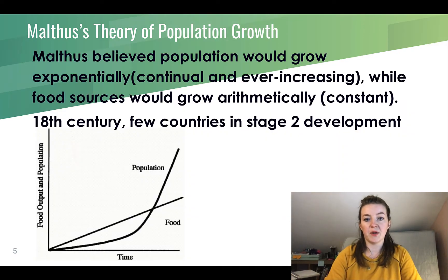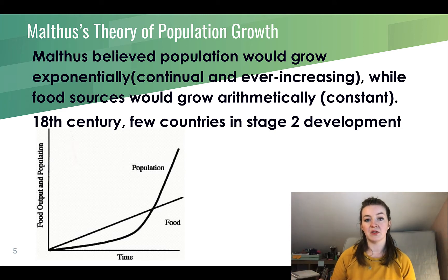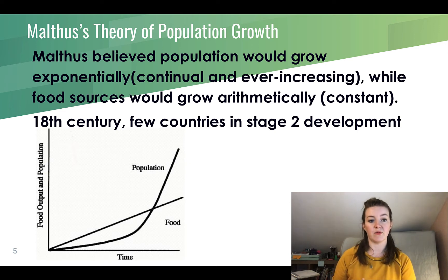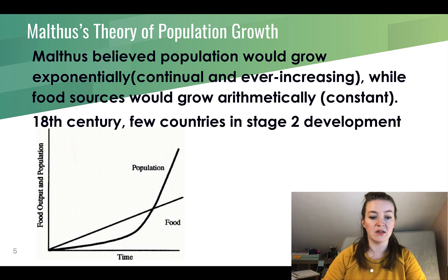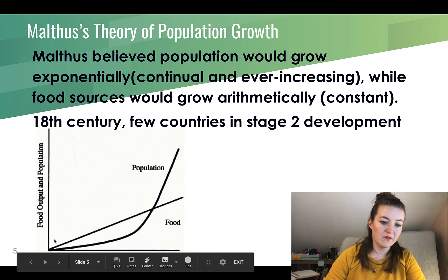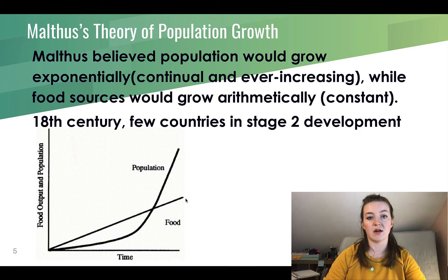Malthus believed that population would grow exponentially — continually and ever-increasing — while food sources would grow arithmetically at a constant rate. He lived in the 18th century when very few countries were even in stage 2 of development. When we graph his theory, food grows very steadily at a constant arithmetic rate.